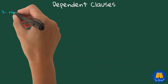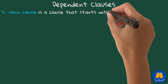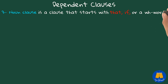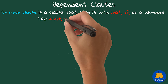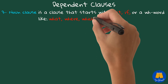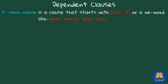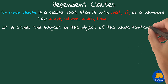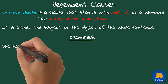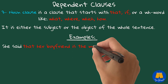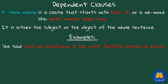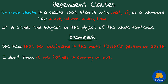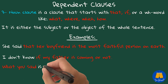A noun clause is a clause that starts with that, if, or a WH word like what, where, which, or how. It is either the subject or the object of the whole sentence. She said that her boyfriend is the most faithful person on earth. I don't know if my father is coming or not. What you said is very important.